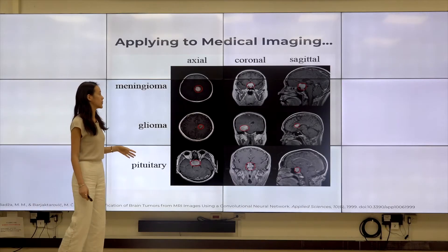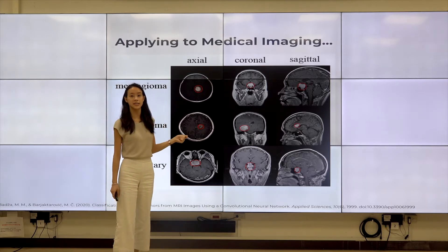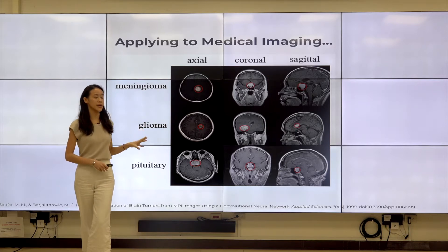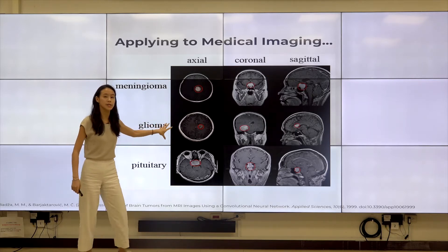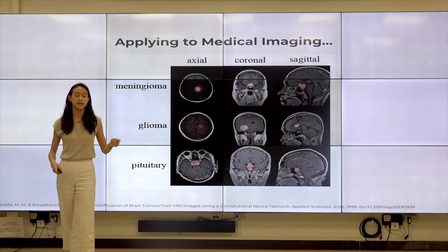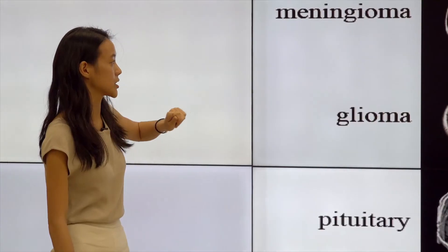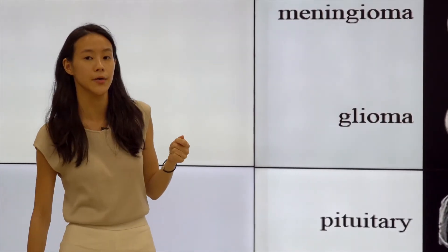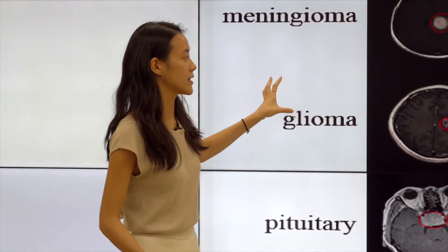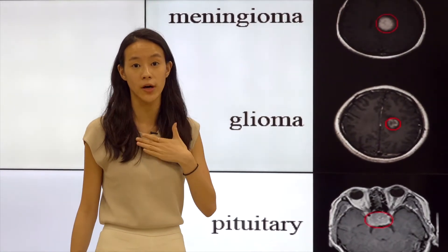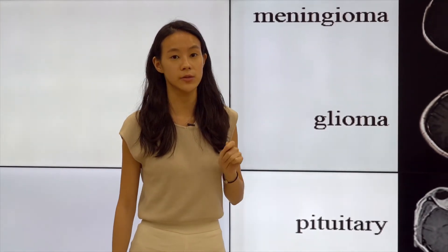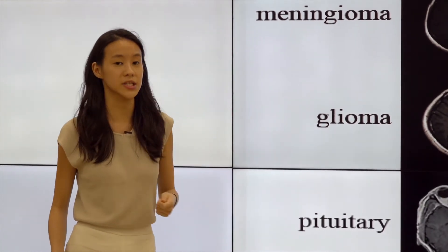Another example is multi-class classification applied to brain tumors. We can classify different brain tumor images into multiple kinds: for example, a glioma or a pituitary tumor, depending on how we classify them. This is what the classification algorithm does for us — it reads these images and classifies the different kinds of tumors, potentially assisting physicians.